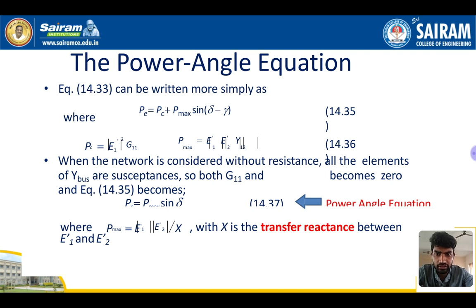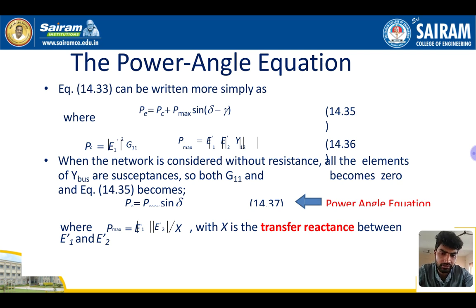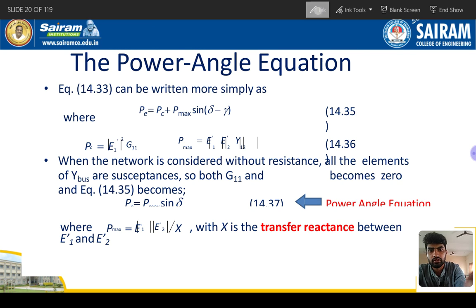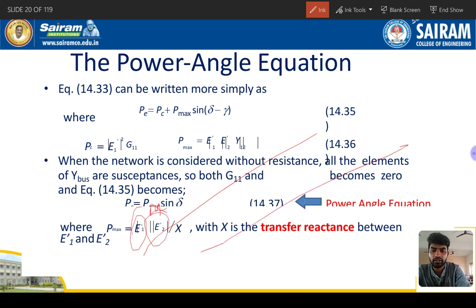The power angle equation can finally be written as: P = Pc + Pmax × sin(δ − λ), equation number 1.35. When the network is considered without resistance, all elements of Y-bus are susceptance, so both G11 and G22 become zero. The result is: Pe = Pmax × sin(δ), which is the power angle equation, where Pmax = E1 × E'2 / X, and X is the transfer reactance.